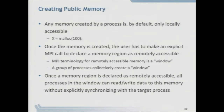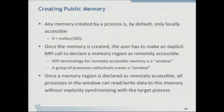First, how do you create this public memory? By default, any memory you allocate in your MPI program — either statically or dynamically — is locally accessible and not directly visible for RMA. You have to take an explicit step to make it visible. The term in MPI for remotely accessible memory is called a window. MPI returns a handle to that window called a window object, of type MPI_Win. All your RMA functions will have MPI_Win as a parameter instead of the communicator. A group of processes collectively create a window.